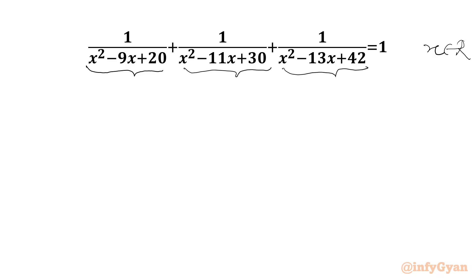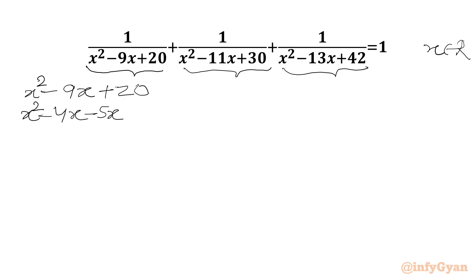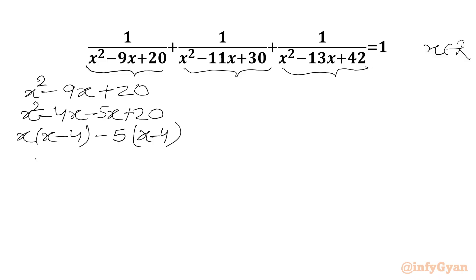We will begin with x squared minus 9x plus 20, which we can write as x squared minus 4x minus 5x plus 20. Now we will take x common: x(x minus 4) minus 5(x minus 4). So our factorization will be (x minus 4)(x minus 5).